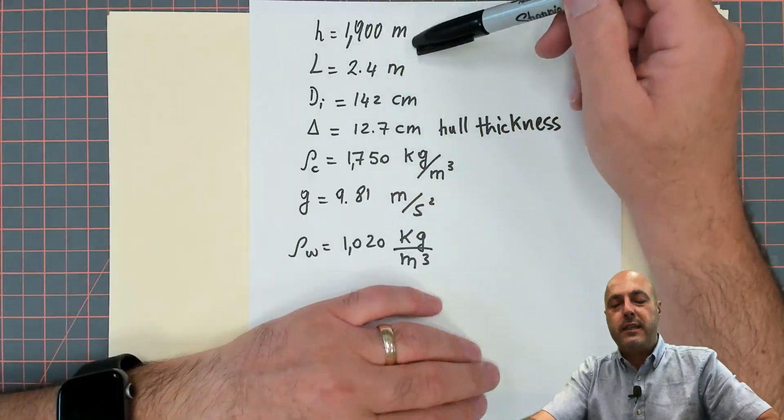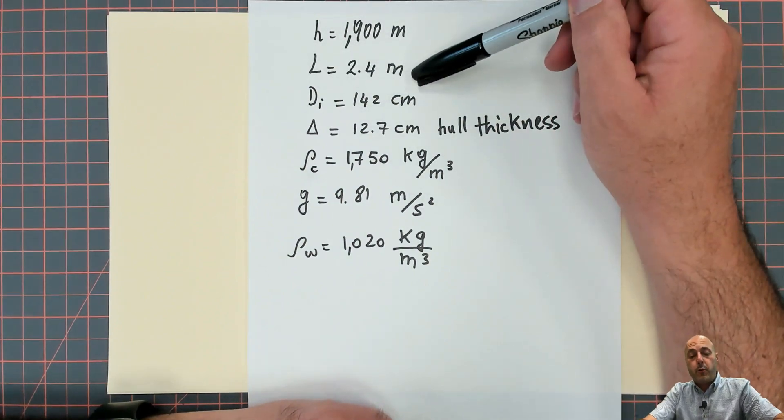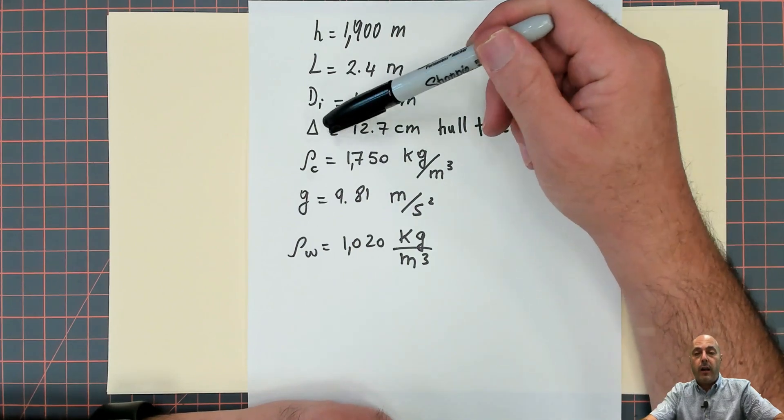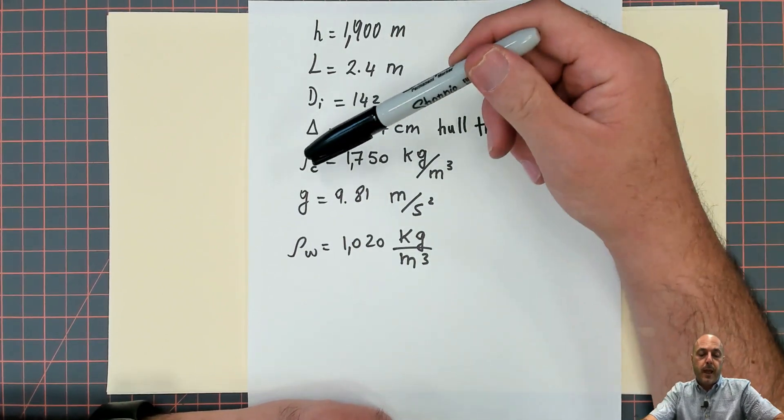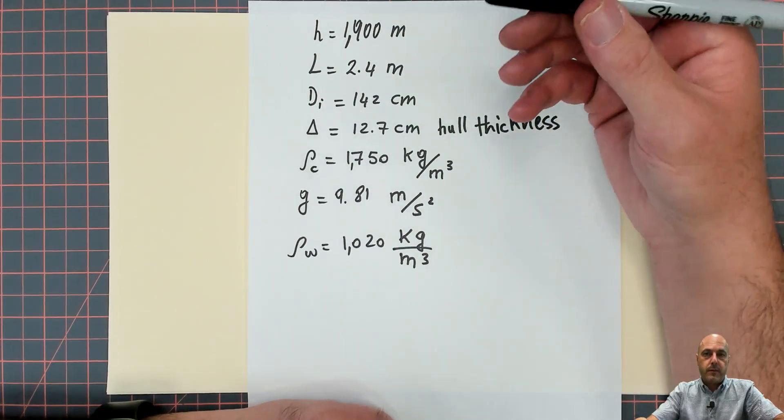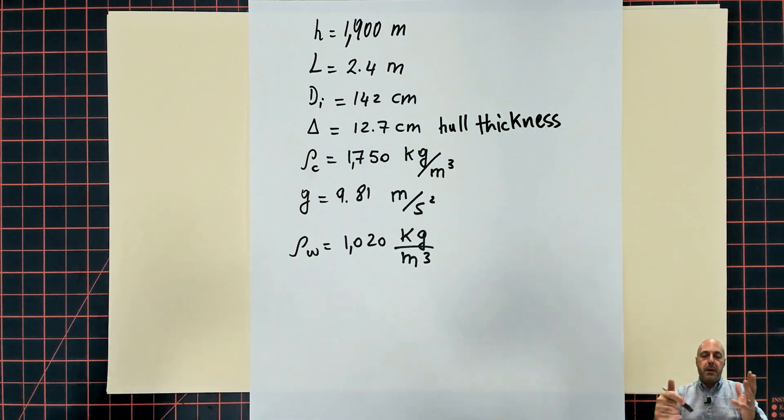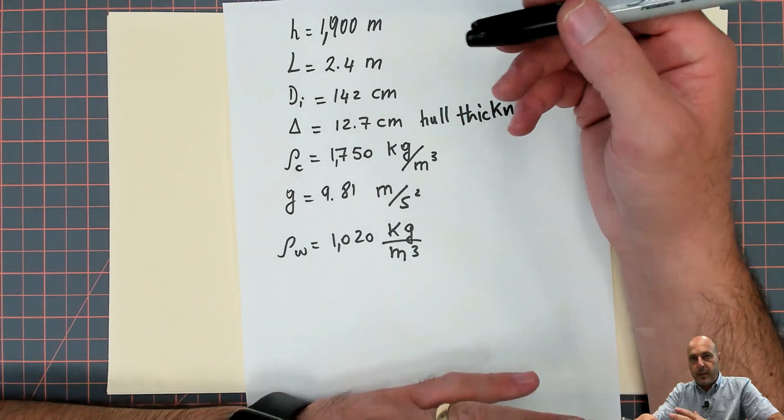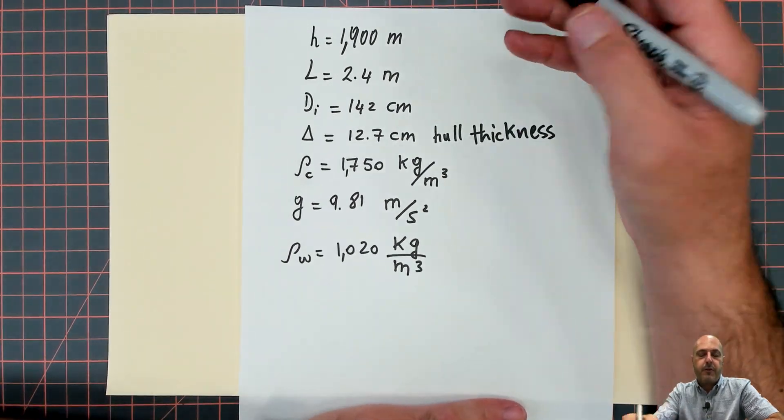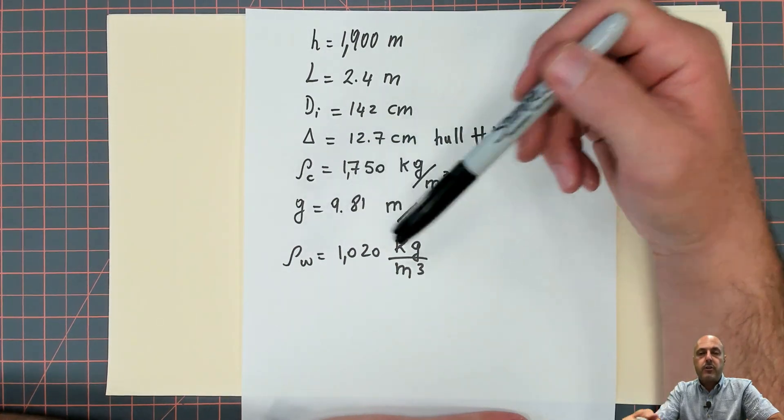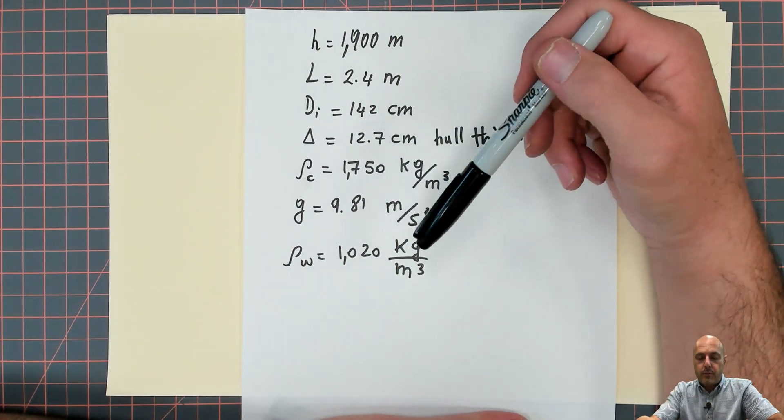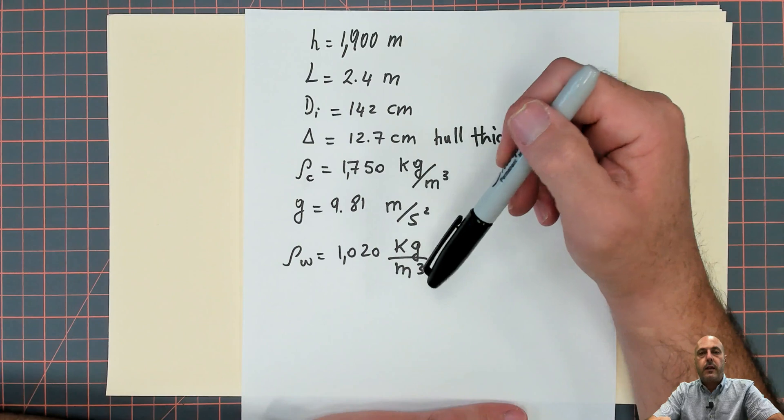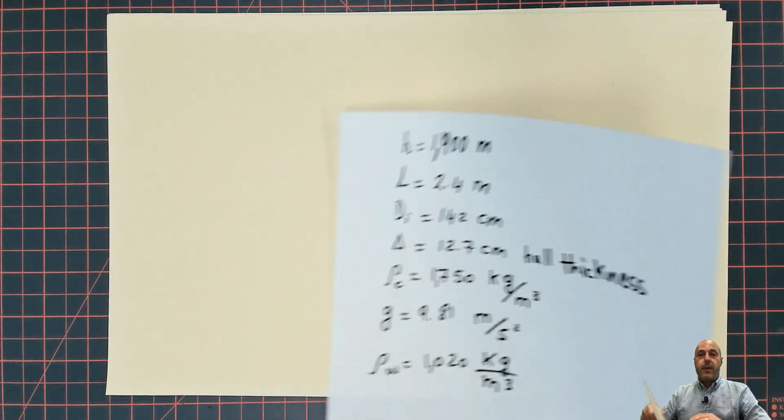The submarine was at a depth of 1,900 meters. I'm going to call that h. It had a length of 2.4 meters. And interestingly, that length is not going to show up in the analysis as we will show. The hull had a thickness of 12.7 centimeters. And the density of the carbon composite material that the hull was made of, as my best guess from what I found on the internet, was 1750 kilograms per cubic meter. Now, you can repeat the analysis with other numbers if you have better information. G is the gravitational acceleration. We're going to take that 9.81 meters per second squared. And finally, the water density on average is going to be 1,020 kilograms per cubic meters. Let's get that set up.